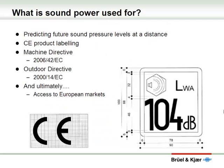What is sound power used for? Sound power can be used to predict future sound pressure levels at any distance. It's an essential part of CE product labeling and is outlined in European directives such as the machine directive and the outdoor directive. And when your products are correctly labeled, ultimately this will give you access to European markets. The image on the right shows you a typical product label showing the amount of sound power.